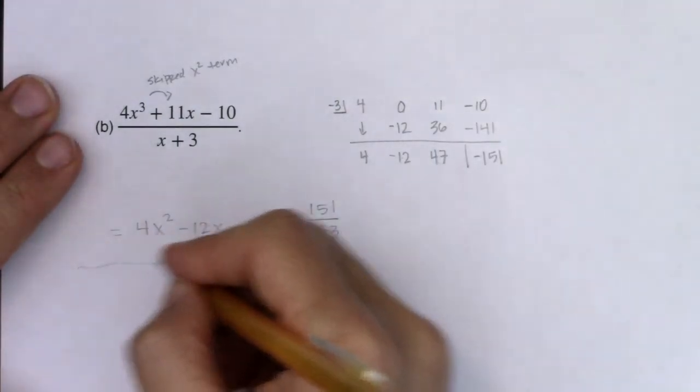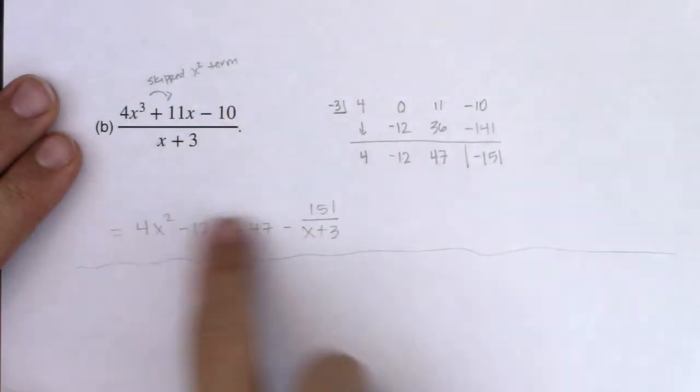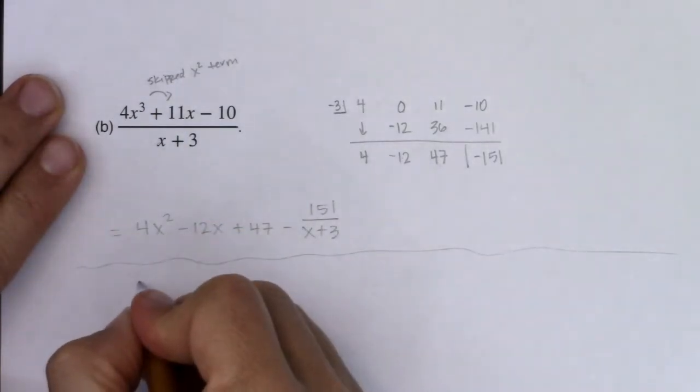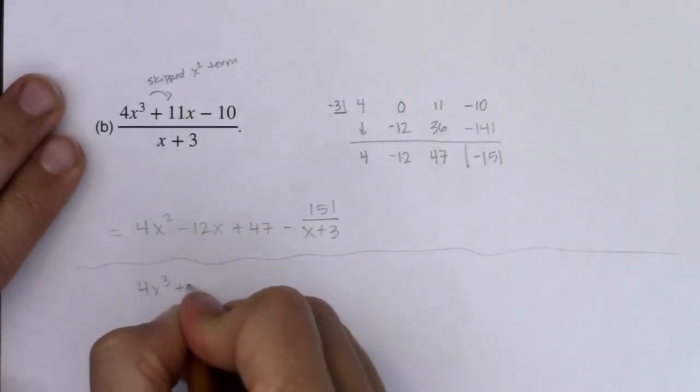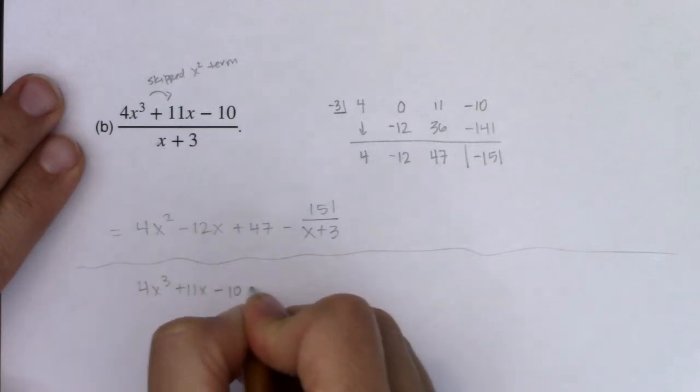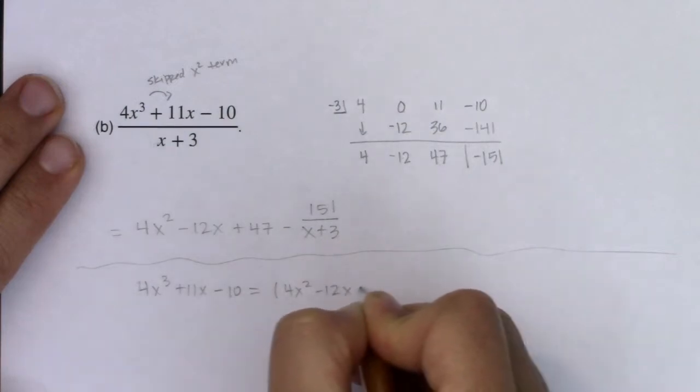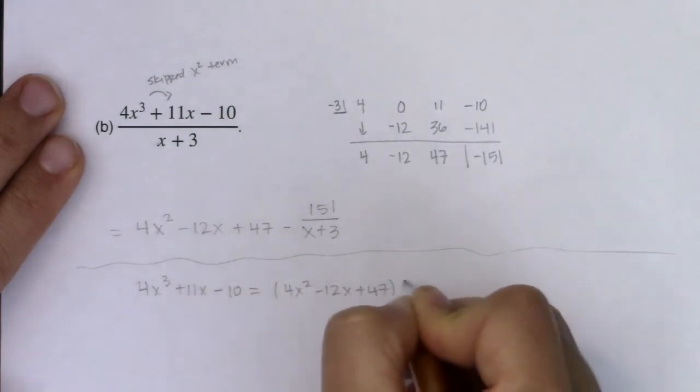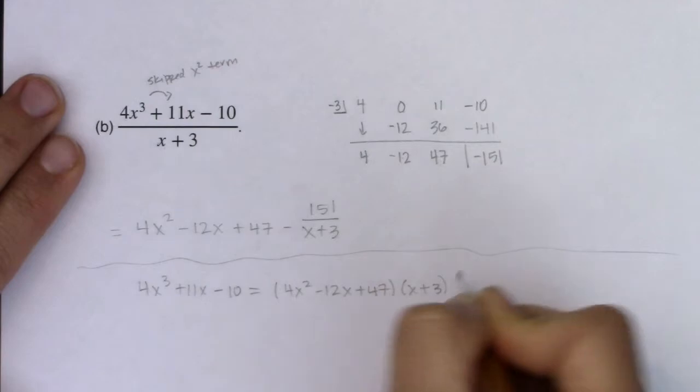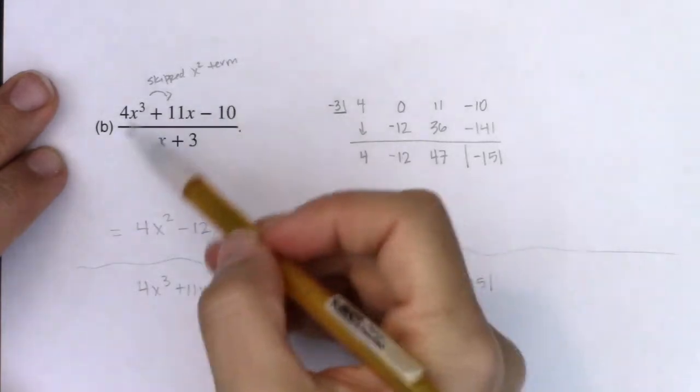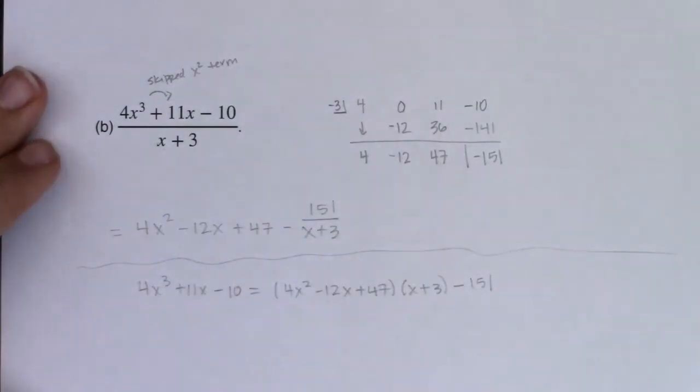And just to remind you, just for fun, if you wanted to, you could multiply this entire equation by x plus 3. And you could rewrite this as my numerator is equal to this quotient, or at least the first part of that quotient times x plus 3 minus 151. And that again would come from multiplying this side of the equation by the LCD and this side of the equation by the LCD.